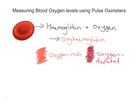We can measure the actual level of oxygen in the blood using this information, using what's called a pulse oximeter. Let's draw a finger of a patient here, and what we're going to do is measure that patient's percentage oxygen level.